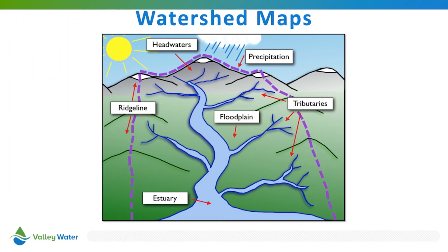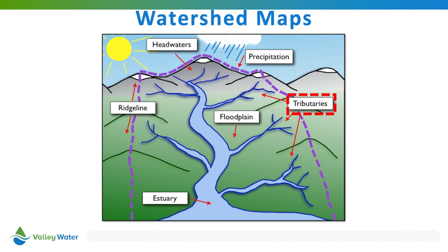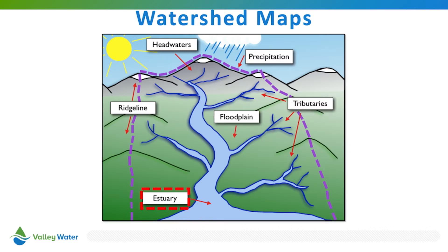The watershed itself is made up of several different parts, as seen here in this diagram. Precipitation is any liquid or frozen water that forms in the atmosphere and falls back to the earth in the form of rain, hail, sleet, or snow. Headwaters are places where streams begin, usually at the highest point in a watershed, like at the top of a hill or mountain. Tributaries are small streams that flow into one another to make larger streams, and these larger streams join to form rivers. A floodplain is an area of land that can become flooded when a river or stream overflows. An estuary is the area where the river meets the ocean — the ocean is salt water, while our creeks and rivers are fresh water, and in this area the two mix. Finally, we have the ridge line, which is the top edge of the mountain that divides one watershed from another — it's what gives our watersheds their borders.